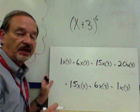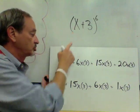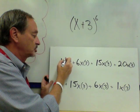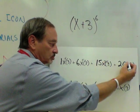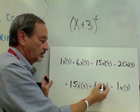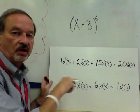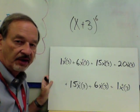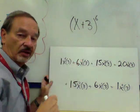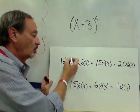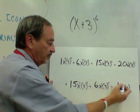Now we're ready to put in the powers, which is also pretty easy. We start with the power we're expanding to — 6 — and assign sequentially lower powers to the X terms: X to the 6th, X to the 5th, X to the 4th, X to the 3rd, X squared, X to the 1st, and X to the 0. That X to the 0 may look weird, but any term raised to the 0 power equals 1. For the second term, we go in the other direction, starting with 0 and going up: 0, 1, 2, 3, 4, 5, and 6.